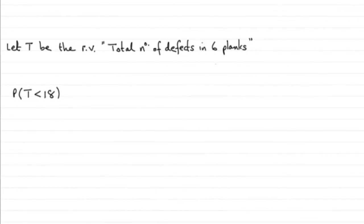Now this question asks us to find the total number of defects in six planks. I've let this random variable T be that total number of defects, and we've got to work out the probability that the total number of defects is less than 18 by using a suitable approximation.